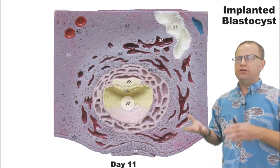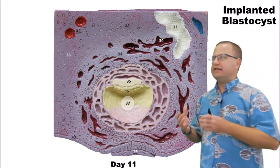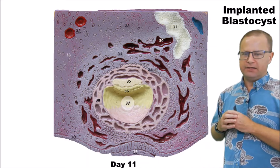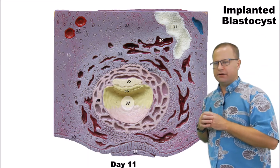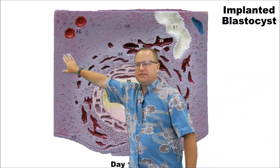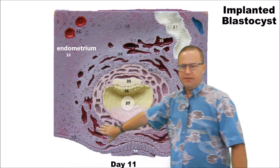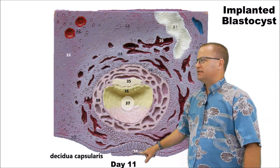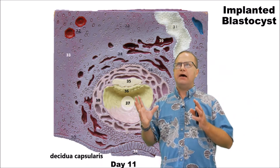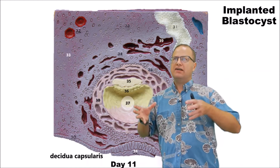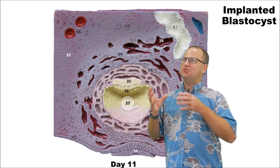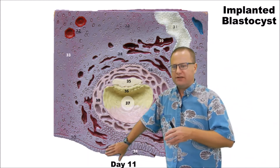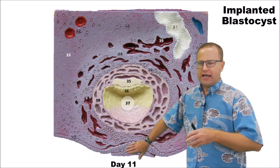Now we're taking a look at an actual human blastocyst, which is implanted in the uterine lining, approximately around day eleven of development. First of all, you can see that this is the endometrium — the uterine lining — and then this part right here is called the decidua capsularis. Basically the blastocyst will connect to the side of the uterus and actually begin to dissolve the uterine lining, and eventually the uterine lining will form over top, and that is our decidua capsularis.